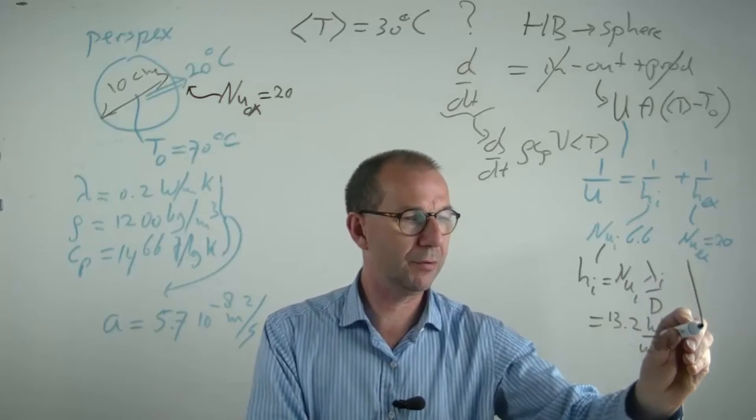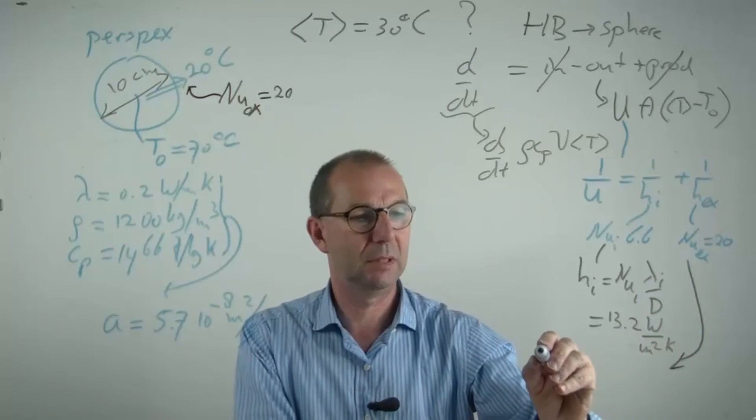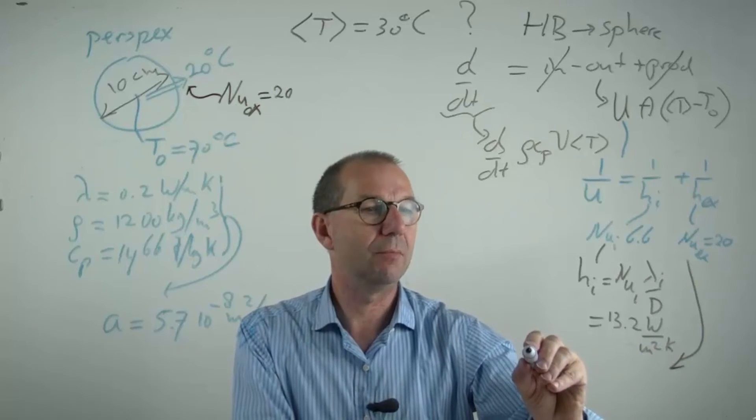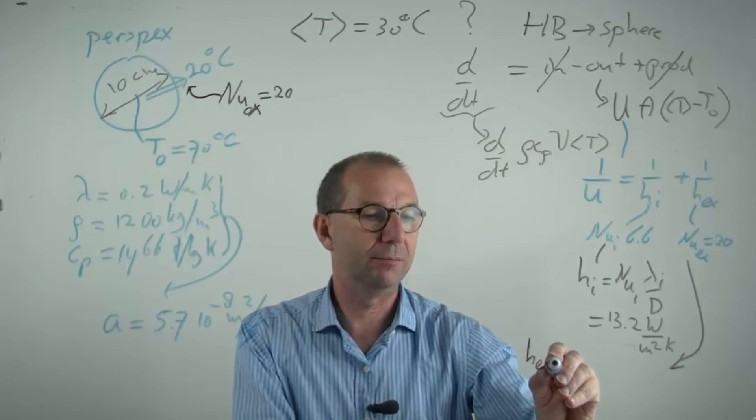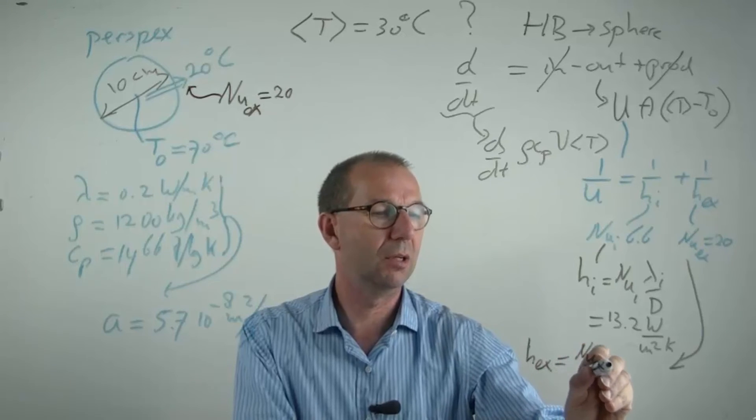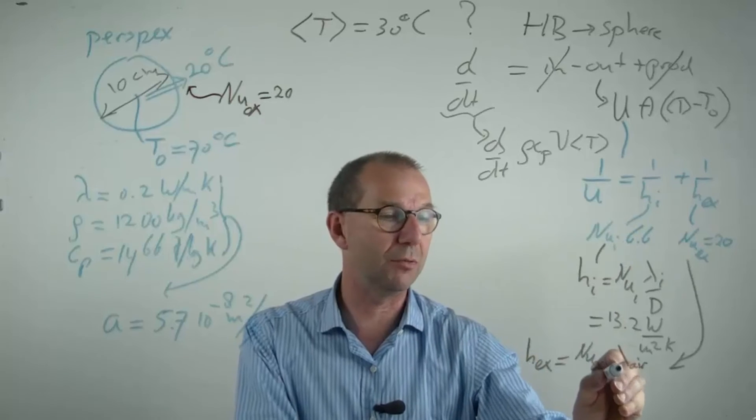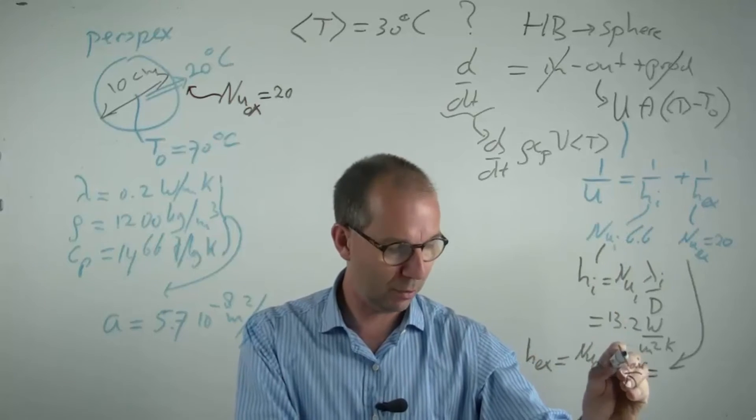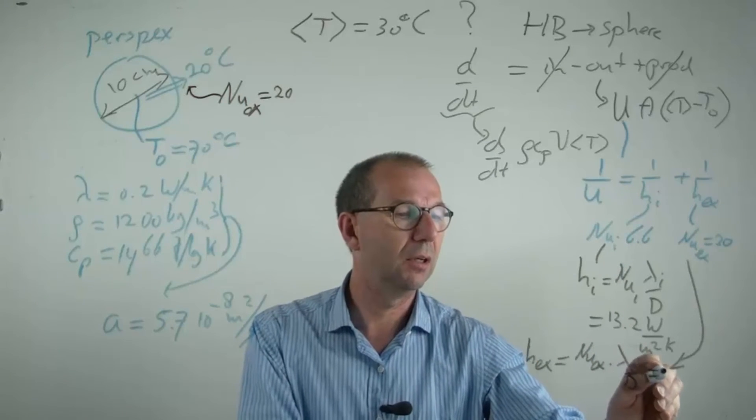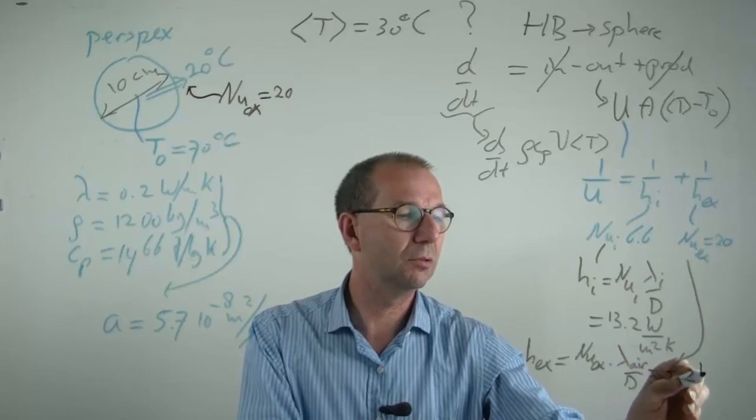External I will have something similar. H external is Nusselt external times lambda of air, because we are now on the outside of the sphere, over D. And if I compute that, I found 5.2 Watt per meter square Kelvin.